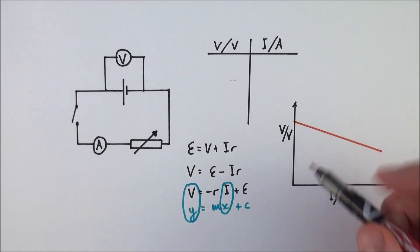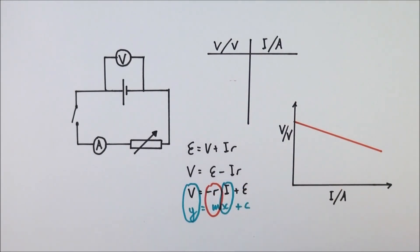Now, what does the gradient mean? Well, the gradient is going to be equal to minus the internal resistance.